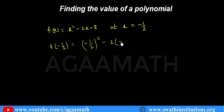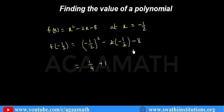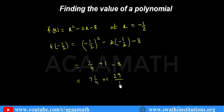Minus 1 by 2 squared gives 1 by 4, and minus 2 times minus 1 by 2 — the 2 cancels — gives plus 1, then minus 8. Simplifying: 1 by 4 plus 1 minus 8. That is 1 by 4 minus 7, which equals 29 by 4. So that is how you find the value of a polynomial.